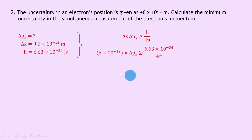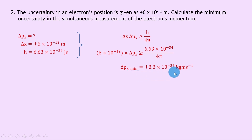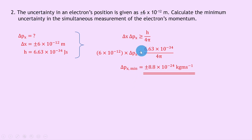Substituting in the numbers gives us 6 times 10 to the minus 12 times delta px is greater than or equal to 6.63 times 10 to the minus 34 divided by 4 pi. To get delta px on its own we divide both sides by 6 times 10 to the minus 12, giving the minimum uncertainty in momentum delta px min equal to plus or minus 8.8 times 10 to the minus 24 kilogram meters per second. Notice we were asked for the minimum uncertainty, so we take the equals part of the inequality.